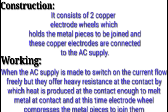Construction: it consists of two copper electrode wheels which hold the metal pieces to be joined, and these copper electrode wheels are connected to the AC supply. When the AC supply is switched on, the current flows freely but offers heavy resistance at the contact, by which heat is produced — enough to melt metal at the contact — and the electrode wheel then compresses the metal pieces to join them.